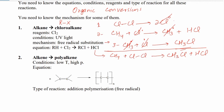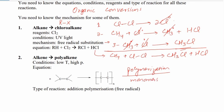Next is alkenes converting to polymers — this is called polymerization. Polymerization is a process in which small structures called monomers are bonded with each other to form a long structure called a polymer. As you can see, we have a number of alkenes with double bonds, but this double bond breaks and they are linked together in a series — this is called polymerization.